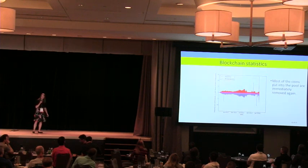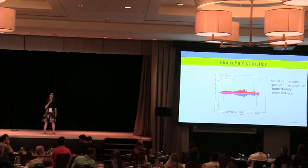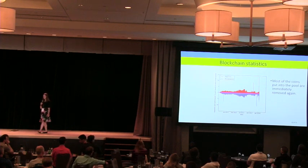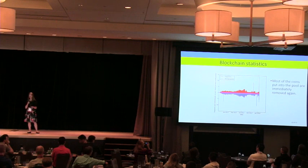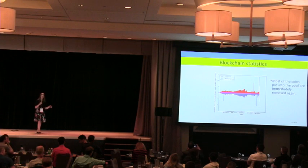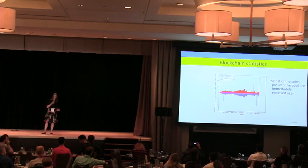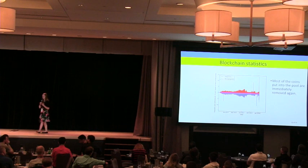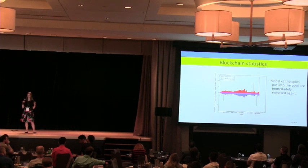This is my favorite graph from the paper. It shows the amount of money being put into the pool versus the amount being taken out over time — the red on top is money into the pool, the blue on the bottom is money coming out. As you can see, they are a near-perfect reflection of each other.